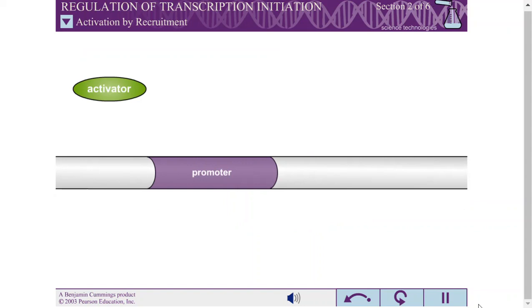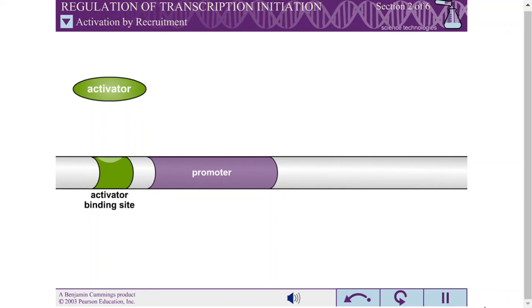An activator is a regulatory protein that increases the level of transcription over the basal level. Activators typically bind to a site on the DNA near the promoter. Most activators have two binding sites, one for interaction with DNA and one for interaction with RNA polymerase.